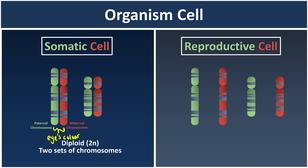Why do chromosomes come in a pair? Imagine this decides your eye colour. You are the product of both your father and your mother. Whenever they give birth to you, your daddy has a secret recipe for manufacturing eye colour — maybe blue. Meanwhile, your mother also has a secret recipe to make your eyes brown. So they sit down together and decide which one you should have. This is why we have a pair of chromosomes, and why we call it a diploid cell.